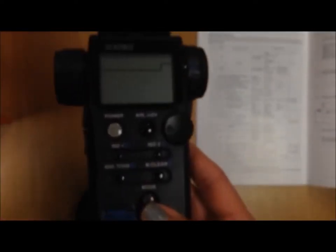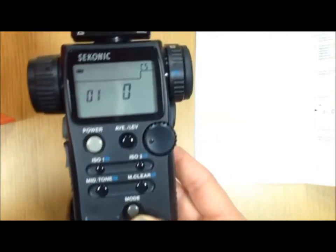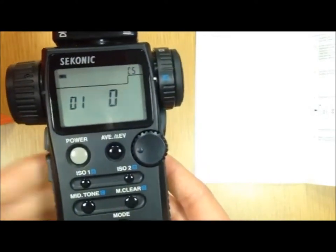In order to enter that menu mode, you're going to press the mode button, hold it down, and then turn your device back on. This will put you into the custom setting menu.